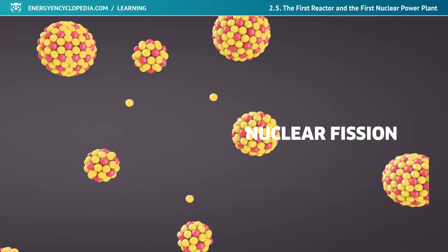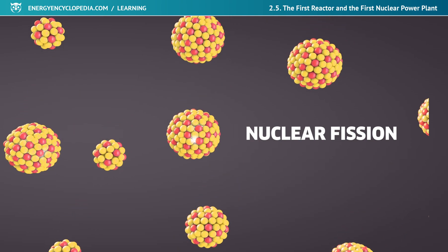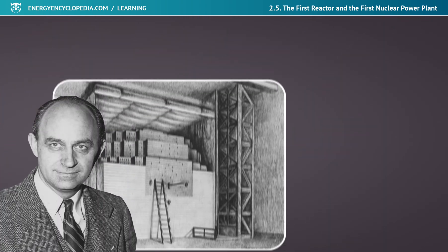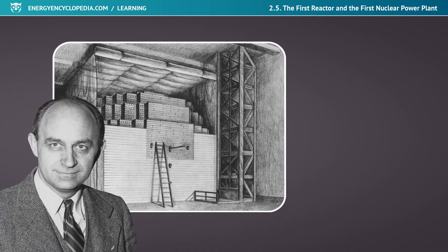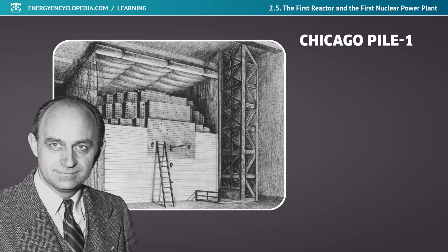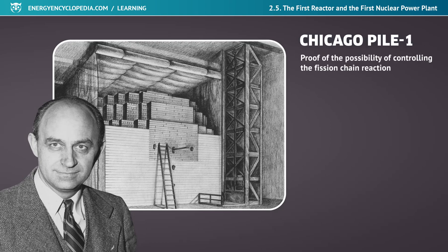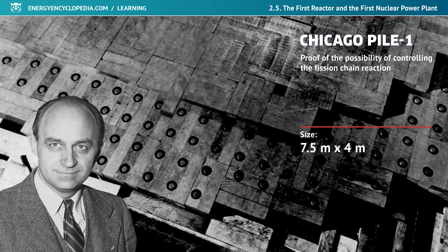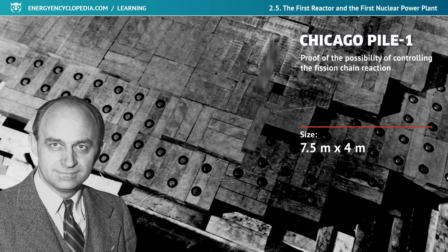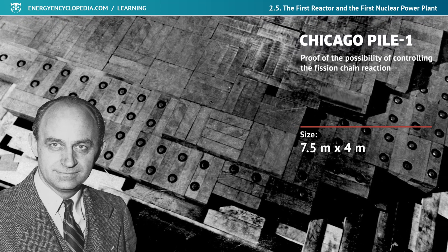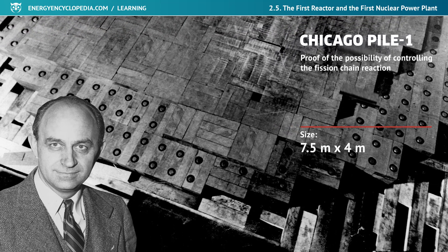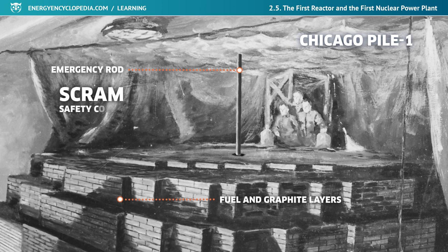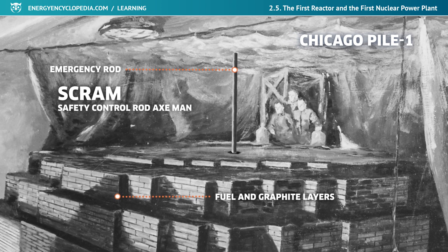In this video, we will set out to the very beginning of nuclear power usage to generate electricity. We will get to know the first nuclear power reactor in which a fission chain reaction was ignited, and its modest but fully functional equipment. We will also learn what the acronym SCRAM means, which is still used today.